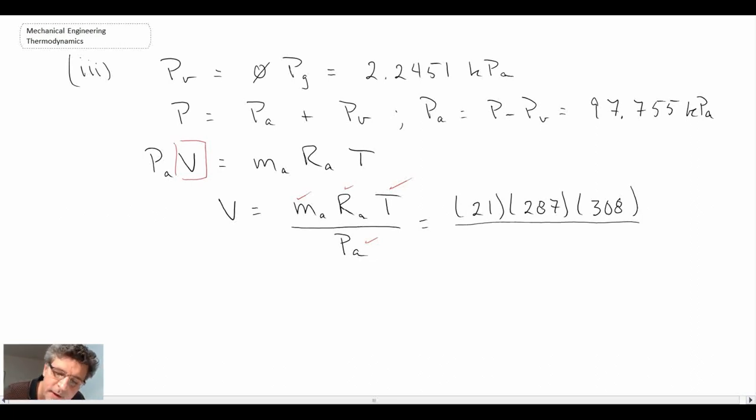And I apologize, there's an error here. That should be 303, because our temperature was 30 degrees C, plus 273. So 303 K is the temperature. And then the pressure, 97,755 kPa, and that results in a volume of 18.68 cubic meters.